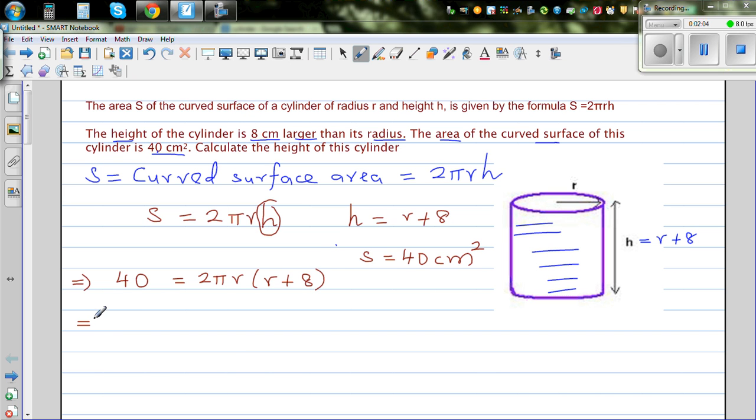Let us expand this. Let's divide both sides by 2. So this becomes 20 equals πr times r plus 8. Expanding this, this implies 20 equals πr² plus 8πr.